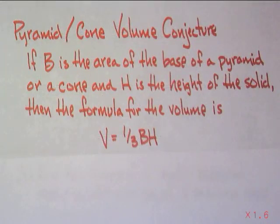So, the conjecture for today is the pyramid and cone volume conjecture. If B is the area of the base of a pyramid or a cone and H is the height of the solid, then the formula for the volume is volume is equal to one-third base times height, or base times height divided by three. Don't forget to divide by three. You will be saying this during the quiz.